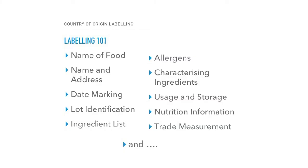Let's start off with an overview of labelling. Country of origin labelling does not sit in isolation to everything else you've got to have on your labels. There are 11 things that need to be on most food labels.